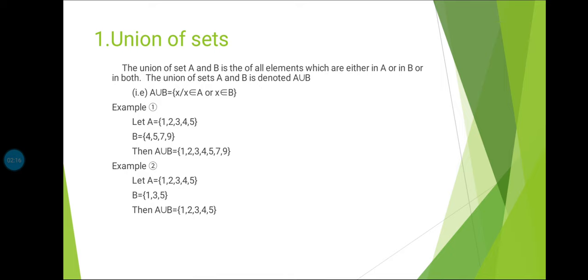Example 2: Let A = {1, 2, 3, 4, 5} and B = {1, 3, 5}. Then A union B = {1, 2, 3, 4, 5}.